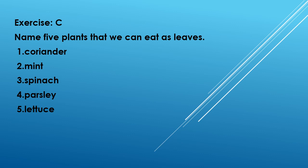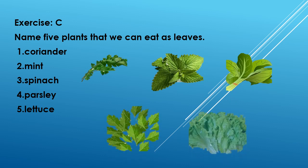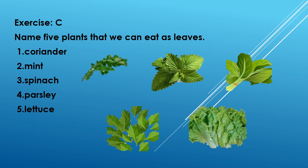Now let's do exercise C. Name five plants that we can eat as leaves. We can eat leaves of coriander, mint, spinach, parsley and lettuce. Repeat after me kids: we can eat leaves of coriander, mint, spinach, parsley and lettuce.